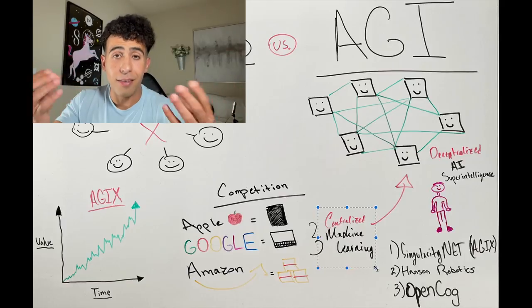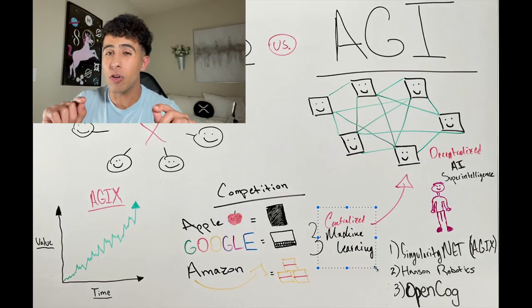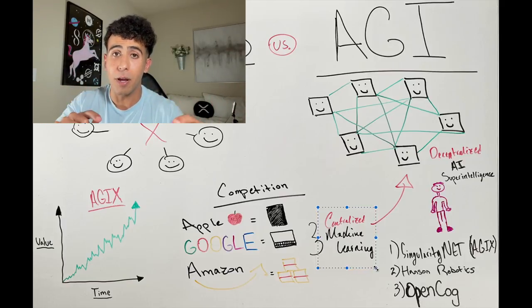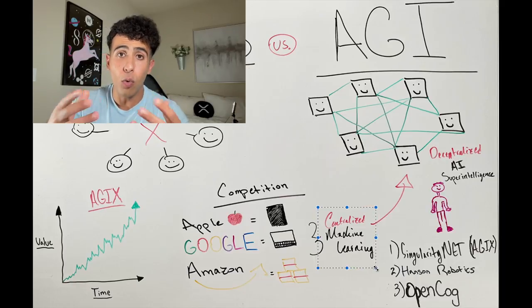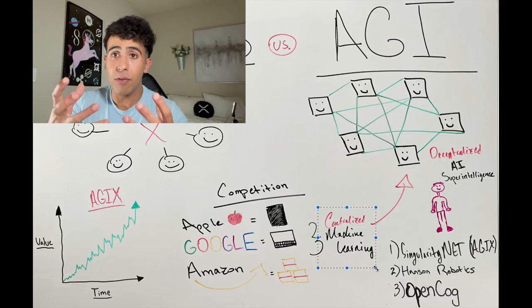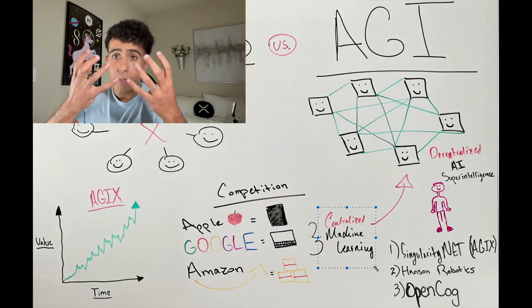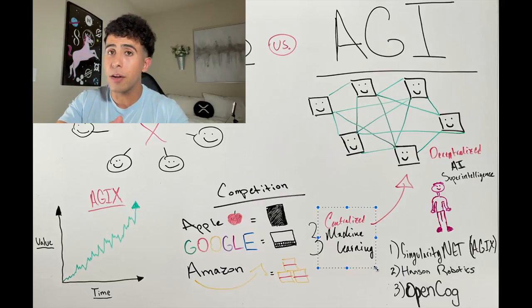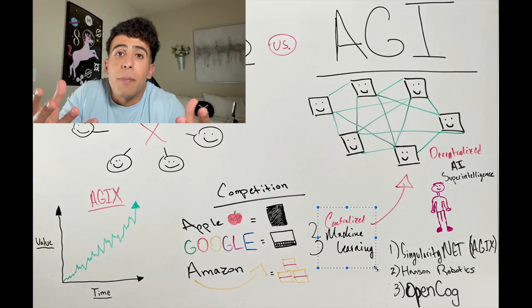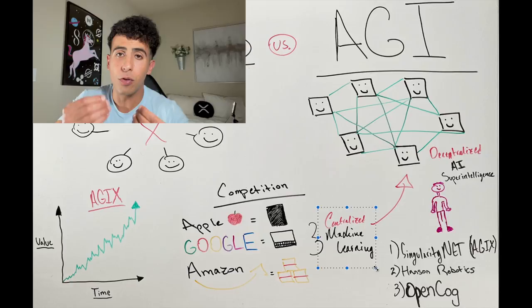We, SingularityNet, wants to build a decentralized AI marketplace. So that means anyone, like you and I watching, have at our disposal, AI services and products and humanoids and whatever we need at our fingertips. That is the beauty of it. And that's what they want to achieve. And that's what I am invested in.